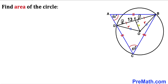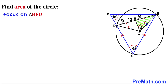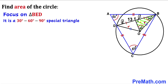We can also observe that perpendicular OE is the angle bisector of angle DOB. Since angle DOB is 120 degrees, each half is 60 degrees. Focusing on right triangle OEB: angle B is 60°, angle E is 90°, so angle O must be 30°, since angles in a triangle sum to 180°. Triangle OEB is a 30-60-90 special triangle.